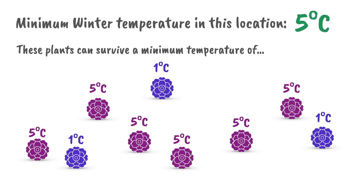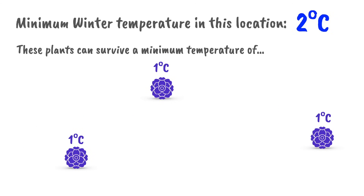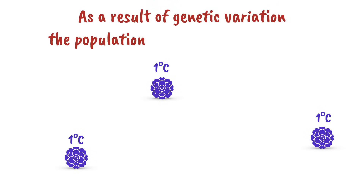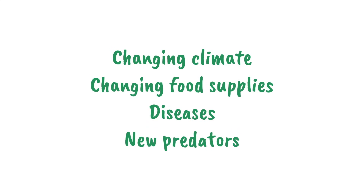But now let's say there is a particularly cold season, and the temperature drops to 2 degrees Celsius — below what this species is used to. The cold temperatures may kill off many of the individuals, but since all of these individuals are unique, some can survive these colder conditions. As a result of genetic variation, the population is more likely to survive. Genetic variation does not necessarily make each individual more likely to survive changing conditions — it makes the population as a whole more likely to survive. Changing climate, changing food supplies, diseases, and the introduction of new predators are all examples of possible changes in the environment that a population may need to be prepared for.